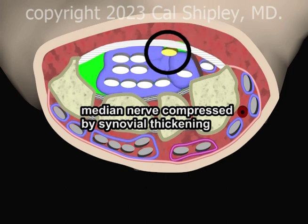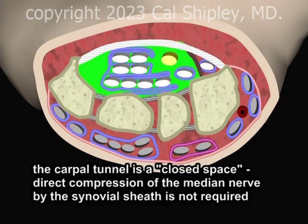In this example, to make the point, I've shown the synovial thickening compressing the median nerve against the transverse carpal ligament. However, because the carpal tunnel acts like a closed space, synovial thickening in any direction may increase carpal tunnel pressure and result in nerve compression, without compressing the nerve against other structures.